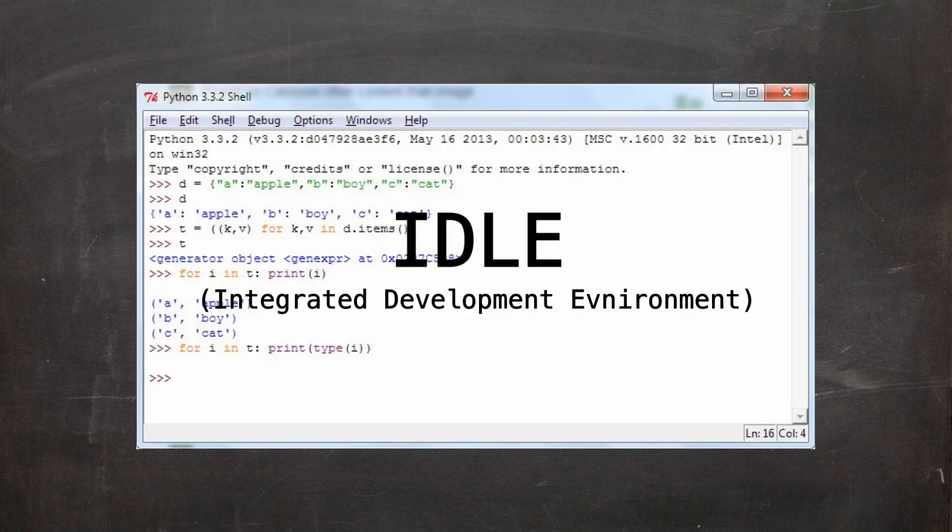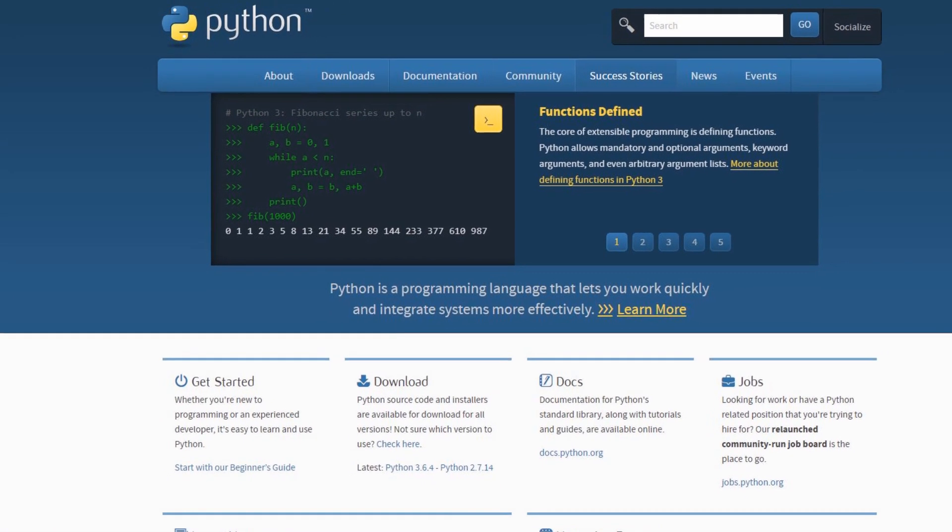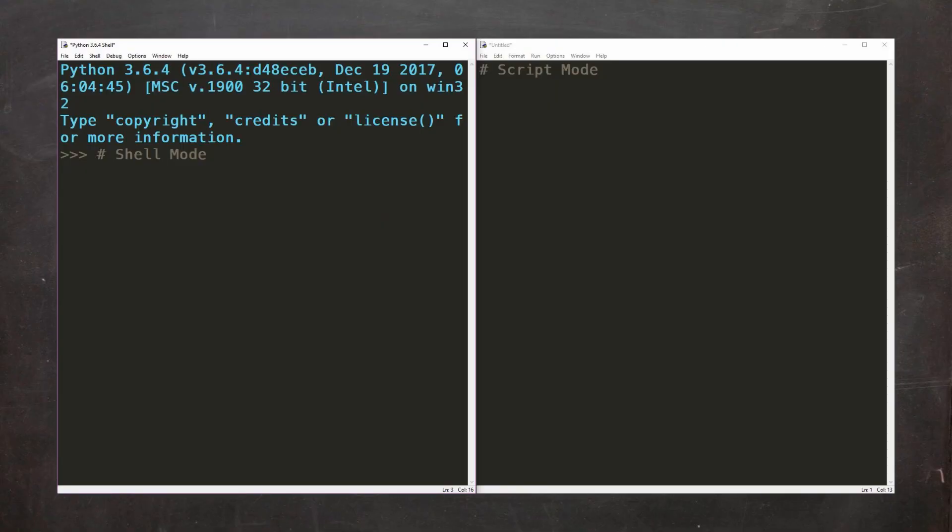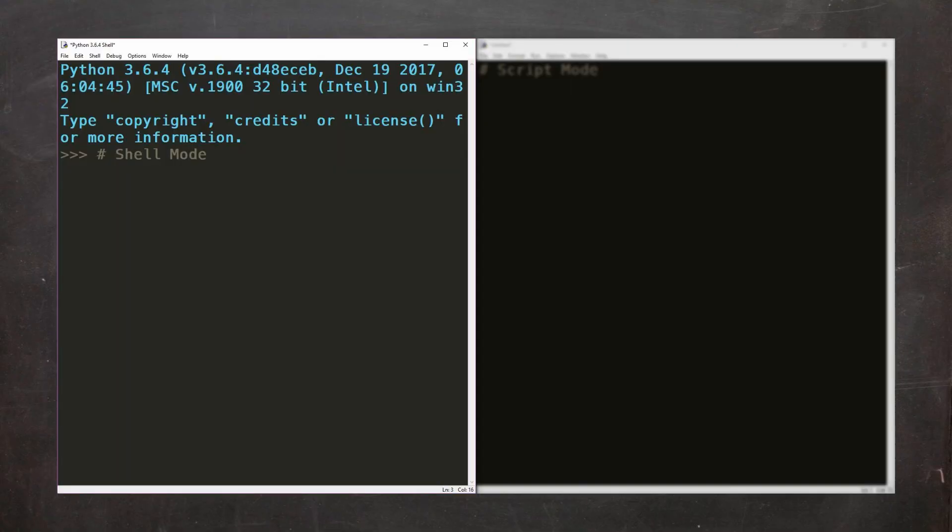You can code in Python using the programming environment called Idle. This can be downloaded from the Python website, and the best part, it's free. Idle has two ways which we can interact with it, script mode and shell mode.